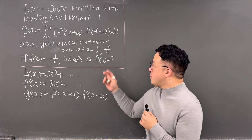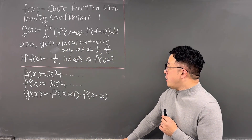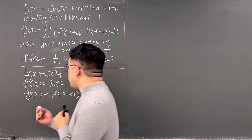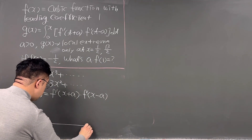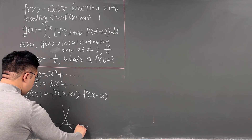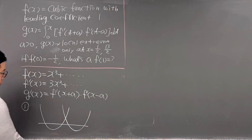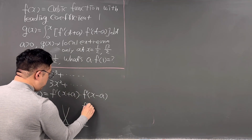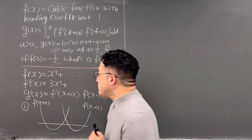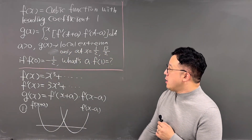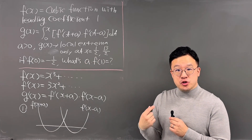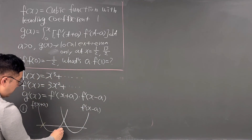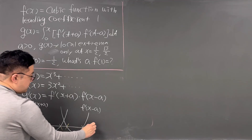The question said g(x) has local extrema only at x = 1/2 and x = 13/2. We can think about three cases for the graph of g'(x). The first case has the left parabola as f'(x+a) and the right parabola as f'(x-a), but g(x) should have local extrema only at those two points, meaning only two sign changes on g'(x). For this first graph, we have four points of sign changes, so this is not the graph we need.